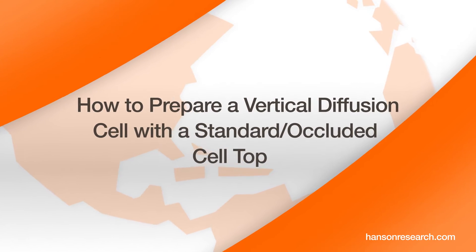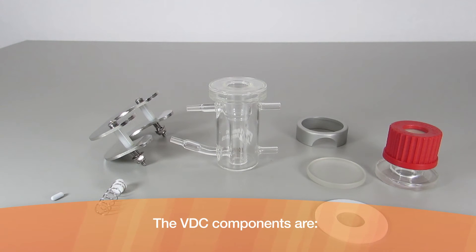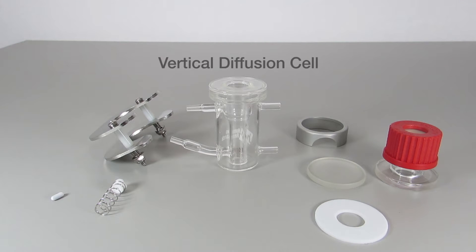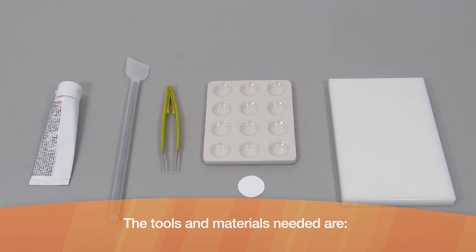How to prepare a vertical diffusion cell with the standard occluded cell top. The VDC components are: vertical diffusion cell, helix kit, clamp, cell ring, glass disc, dosage wafer, and open cell top. The tools and materials needed are: dosage spatula, tweezers, spot plate, membrane block.